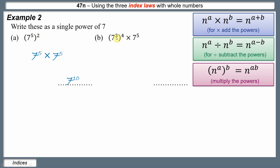Here we've got 7 cubed to the power of 4, and we also need to multiply by 7 to the power of 5. Write out 7 cubed to the power of 4 as 7 cubed times 7 cubed times 7 cubed times 7 cubed. Adding those powers gives 7 to the power of 12. Then we still need to multiply by 7 to the power of 5, so adding all powers gives 7 to the power of 17.